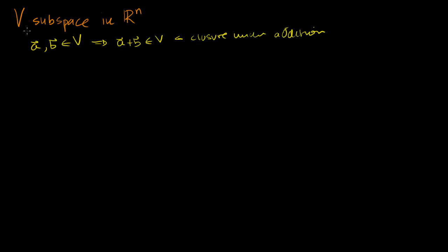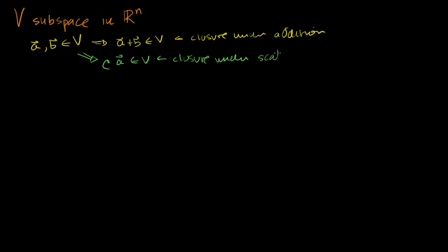By the fact that it's a subspace, we also know that if we multiply any member of our subspace by a scalar — so if I pick A and multiply A by some scalar — that this is also going to be a member of our subspace. We sometimes call this closure under scalar multiplication.